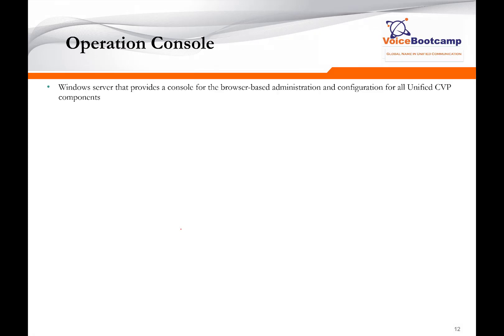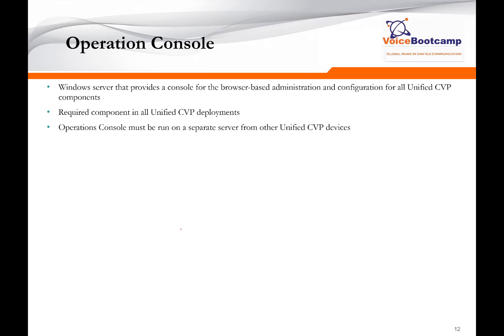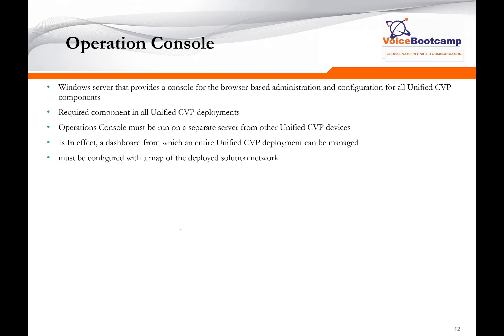The operation console is a Windows server that provides a console for browser-based administration and configuration for all CVP components. It is a required component in all CVP deployments, and you must have at least one operation console. While you can only have one operation console, you can manage hundreds of CVP servers from that same console. It is essentially a dashboard from which CVP servers are deployed and must be configured within a network map of the deployed solution. It has standard tools to back up both the network map and configuration information locally on that server.